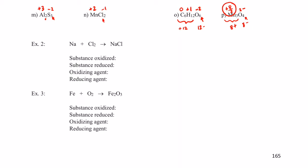Sodium is in its elemental state, and substances in their elemental state have an oxidation number of zero. Cl₂ is the elemental form of chlorine, so its oxidation number is zero. Now sodium chloride is a compound — chlorine would be negative one and sodium would be positive one. Go back and review how to find oxidation numbers if you've forgotten how I got those.